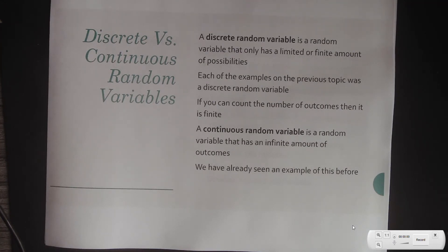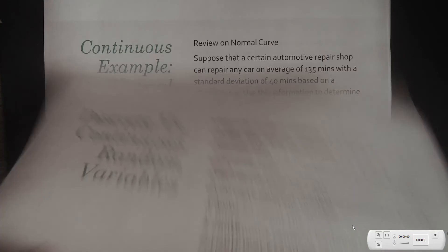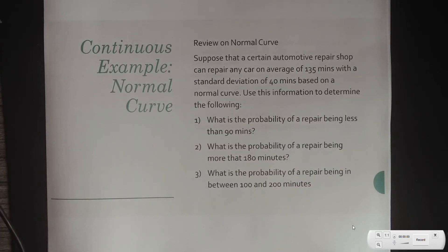Basically, nothing's really truly infinite, but it would be so vast that you could never get them all. I guess that's not true, there are things that are infinite, but just have a vast amount that you could never actually count them all. So, we see an example of a continuous random variable, and that is the normal curve.